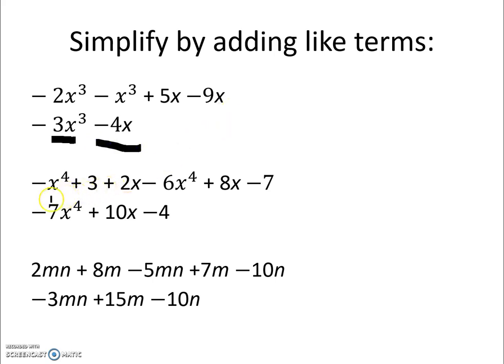Looking at the next polynomial, we see that there is a negative x to the 4th minus 6 more x to the 4th for a total of negative 7x to the 4th.